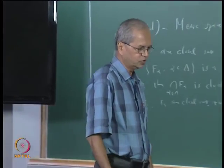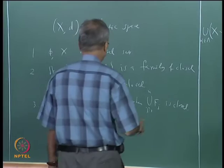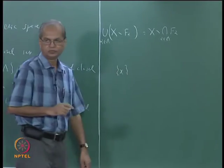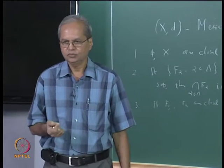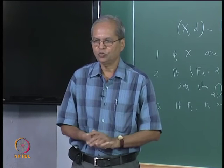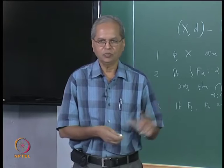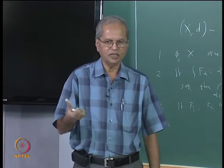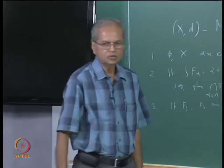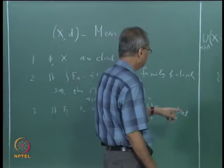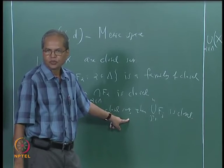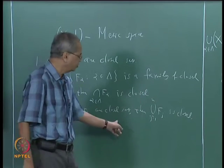Is it clear that in any metric space, the singleton set {x} is always a closed set? Take the complement X minus {x} — you can easily find a ball around any point in the complement that is disjoint from {x}. So the complement is open, meaning {x} is closed. Combining this with the finite union property, every finite set is closed, since every finite set is a finite union of singleton sets.